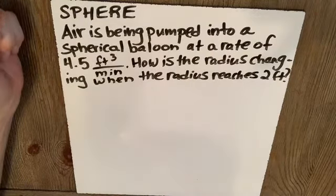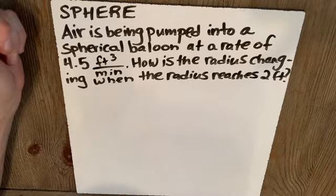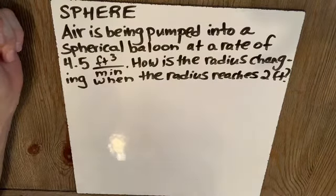Air is being pumped into a spherical balloon at a rate of 4.5 feet cubed per minute. How is the radius changing when the radius reaches two feet?